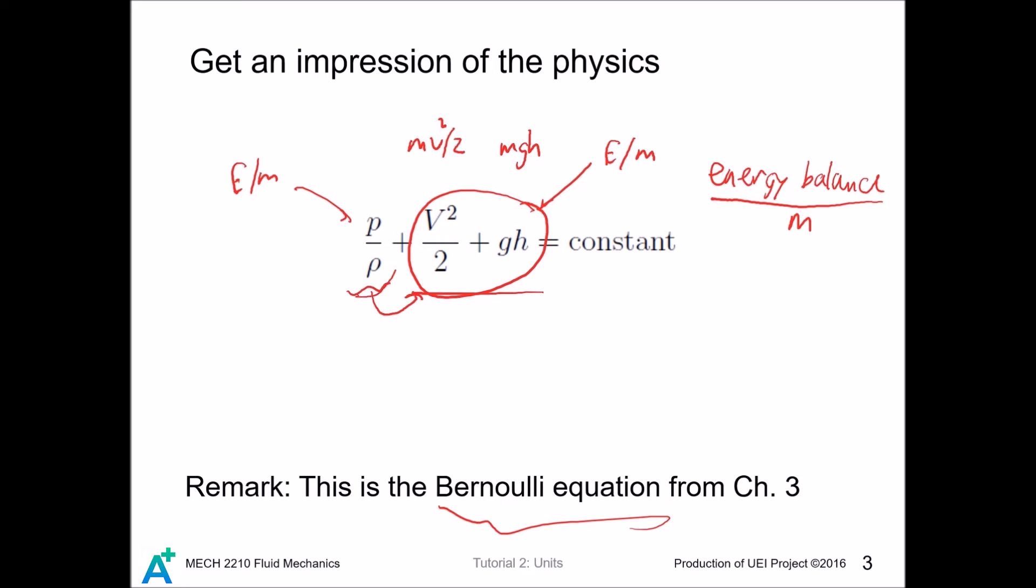In fact, you have learned about the first term in thermodynamics. Since density is mass per volume, and specific volume is volume in each unit mass, then we have rho equals 1 over v. If we rewrite the first term, it becomes pv, which is the flow work you have learned in thermodynamics.